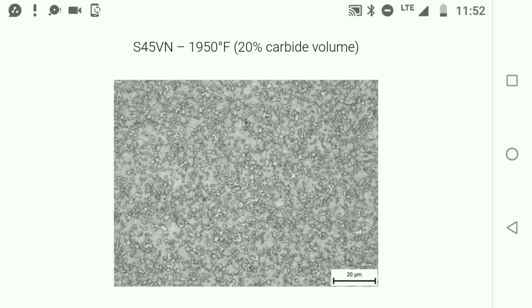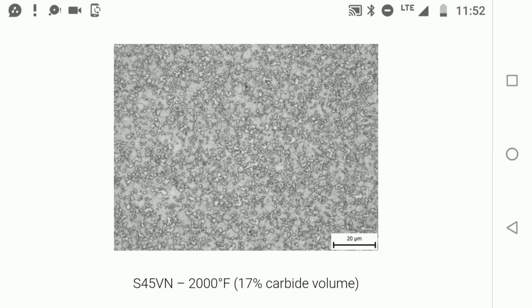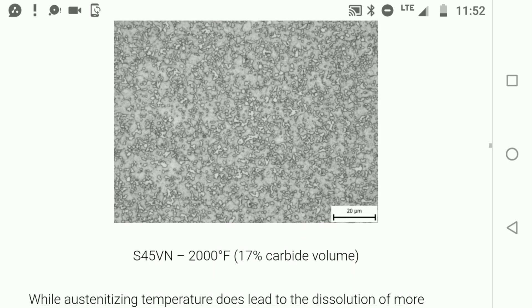The idea with S45VN is that you can run it at 2000 degrees Fahrenheit when you're austenizing it, and you can see we have 17% carbide volume. This 17% carbide volume is divvied up between chromium carbide and a vanadium-rich carbide. The ratio between chromium carbide and vanadium carbide will have a little bit more vanadium carbide than we usually have in these types of stainless steels.